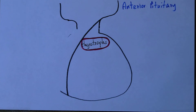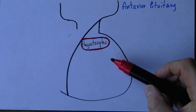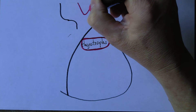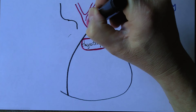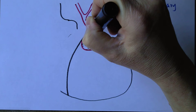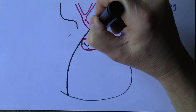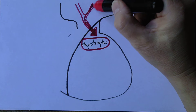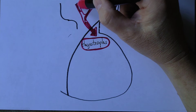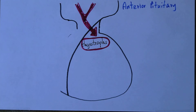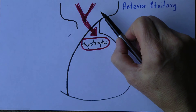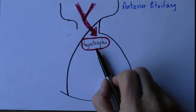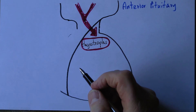The thyrotrophs, like the other cells in the anterior pituitary — the adenohypophysis — are stimulated by the releasing hormones produced in the hypothalamus, passing down through the portal veins, stimulating the release of the trophic hormones. The particular releasing hormone that stimulates the thyrotrophs is thyrotrophin-releasing hormone.